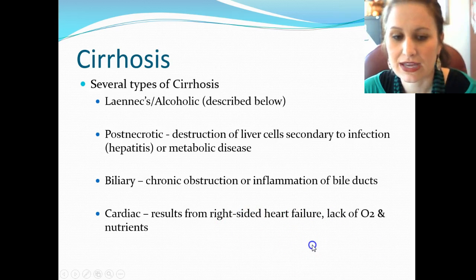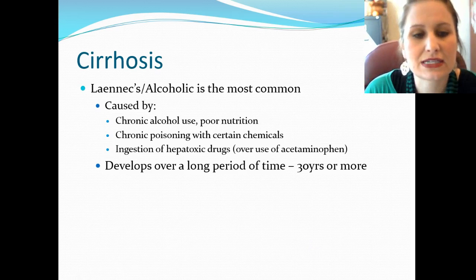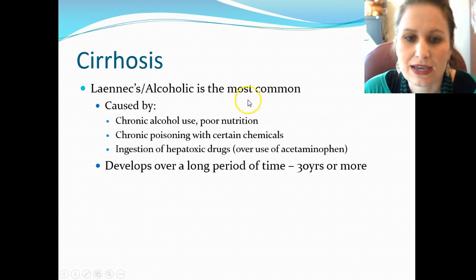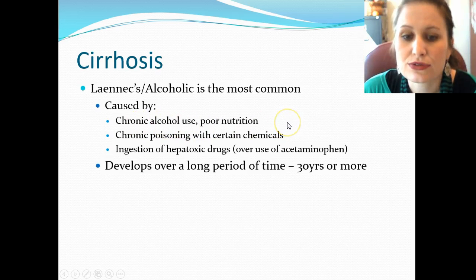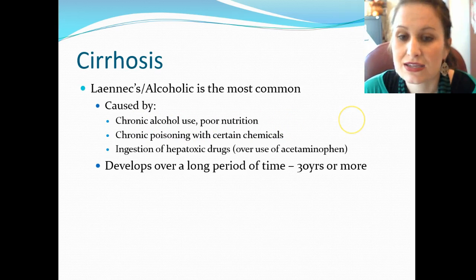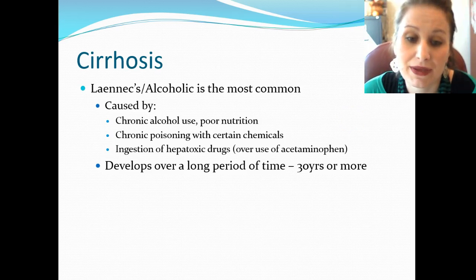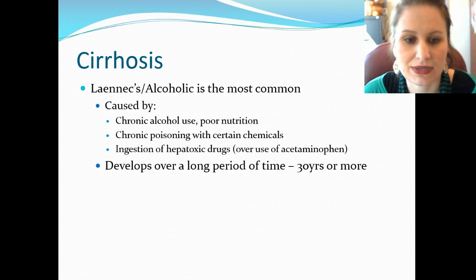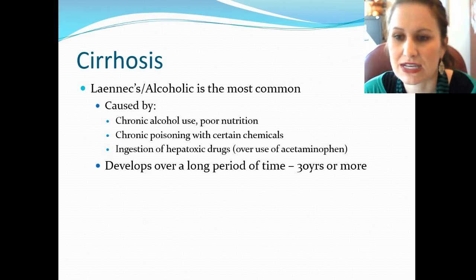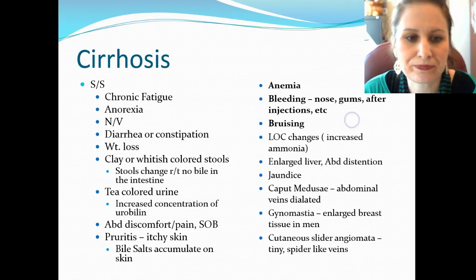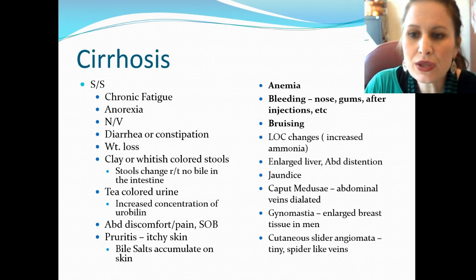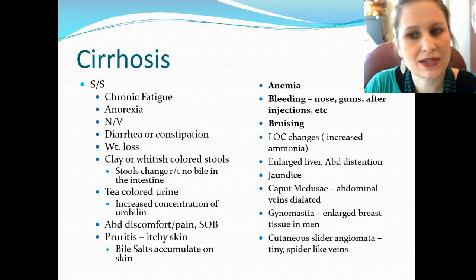Laënnec's alcoholic cirrhosis is caused by chronic alcohol use, poor nutrition, chronic poisoning with certain chemicals, and ingestion of hepatotoxic drugs like Tylenol (acetaminophen). Typically this happens over a long period of time — at least 30 years or more. Cirrhosis is not a pretty disease at all.